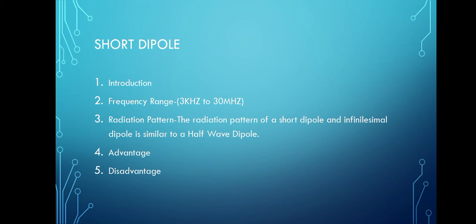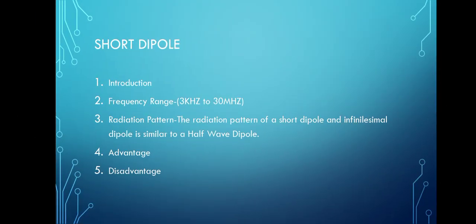The radiation pattern of the short dipole is similar to that of the half-wave dipole. The short dipole and the infinitesimal dipole are similar. If the dipole is vertical, the pattern will be circular. The radiation pattern is in the shape of a figure-eight. When viewed in two dimensions, there are two views: the side view and the top view along the axis of the antenna element.